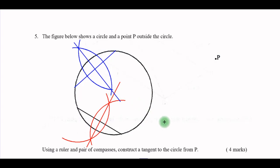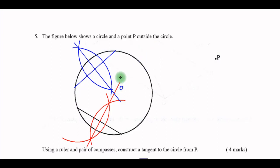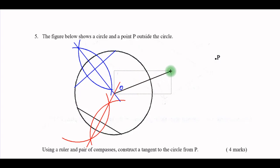This center I can call it O. So this is the center of the circle. From there I join O and the external point P — let me join this point with the external point P.